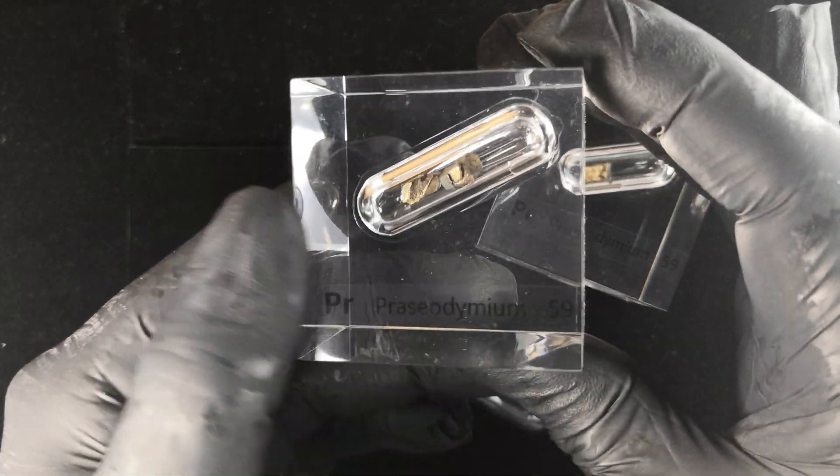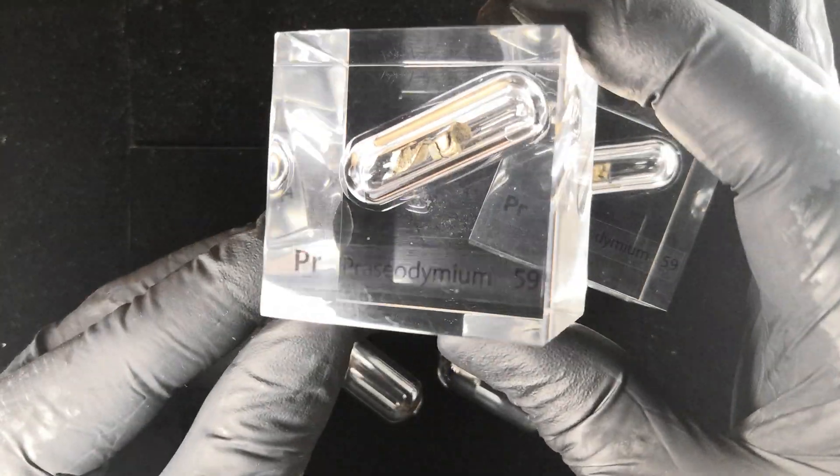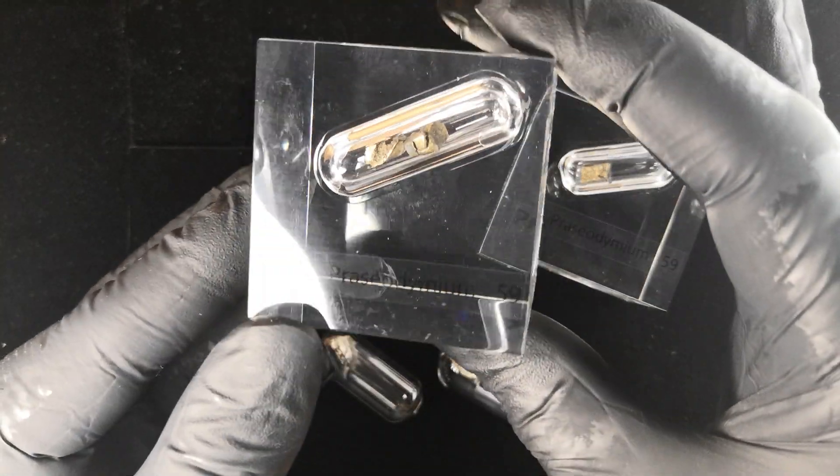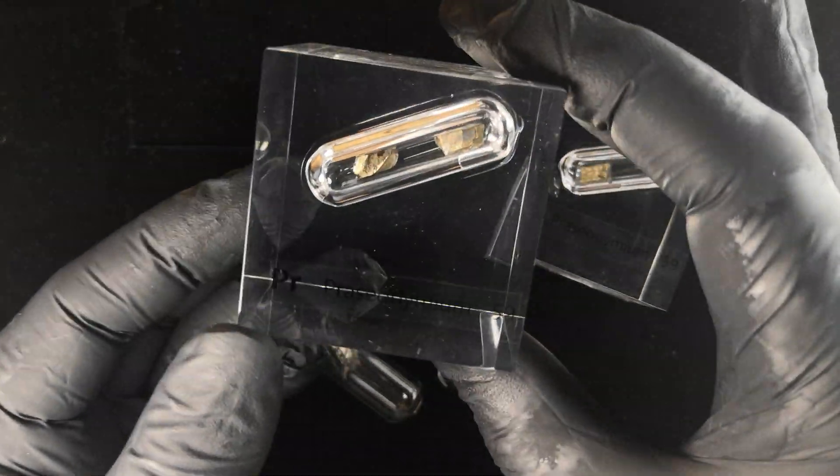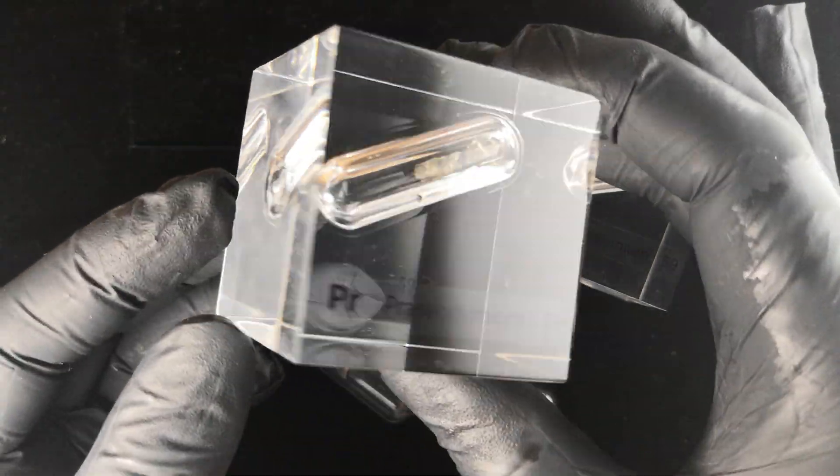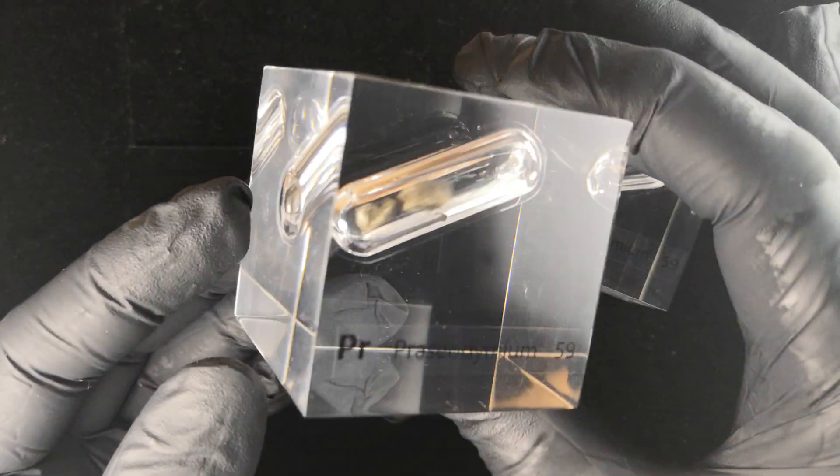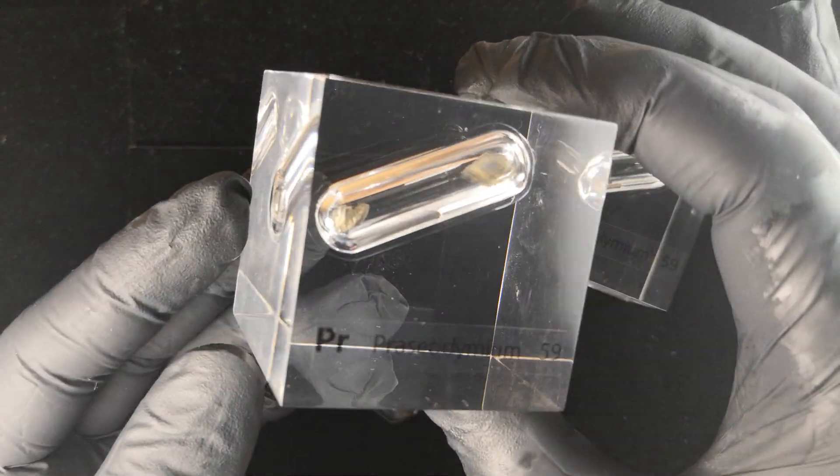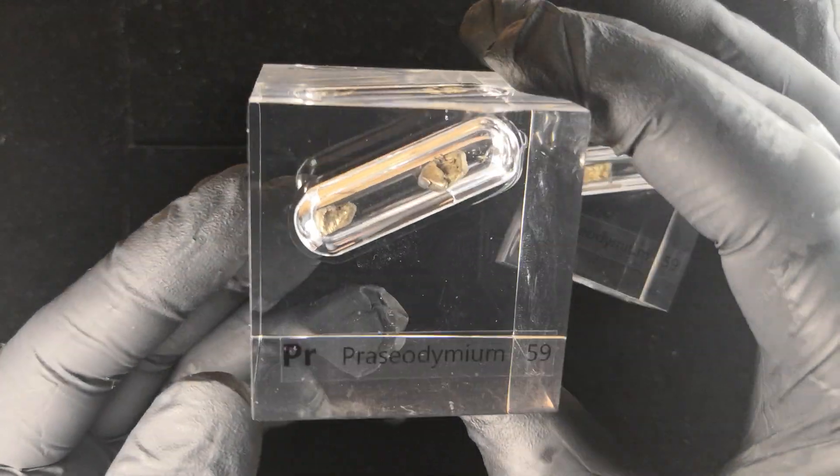Excuse the dust that collects here. But these can all show more or less the same. These samples are always different, but you can hear it clinking inside. This is pure praseodymium metal.